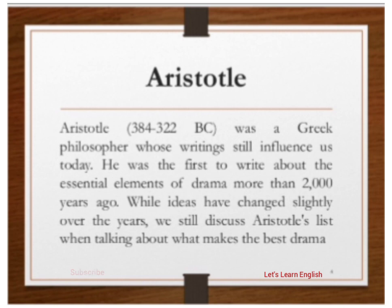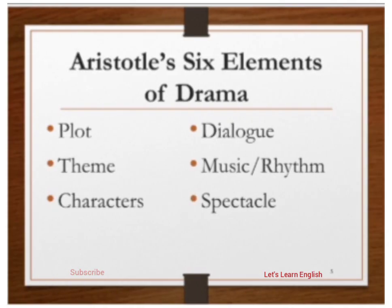اریسٹوٹل کے six elements of drama یہ ہیں: پہلا plot، پھر dialogue، پھر theme، پھر music — جسے rhythm بھی کہتے ہیں، یعنی play کے background میں جو music ہوتا ہے — پھر characters، اور پھر spectacle۔ اب ہم one by one discuss کریں گے کہ plot، dialogue، theme، music، character، اور spectacle کیا چیز ہیں۔